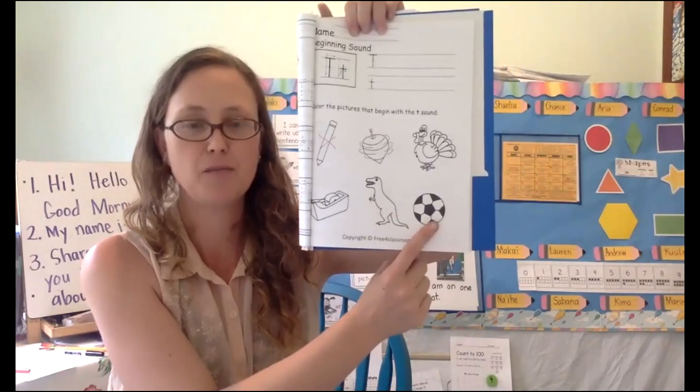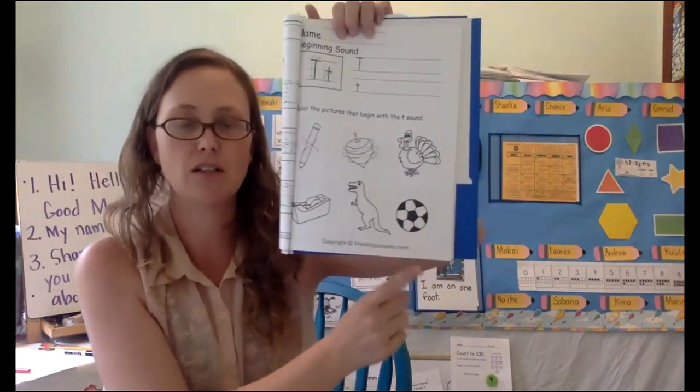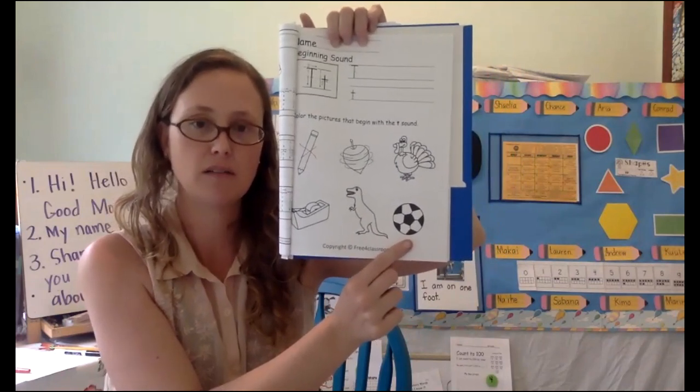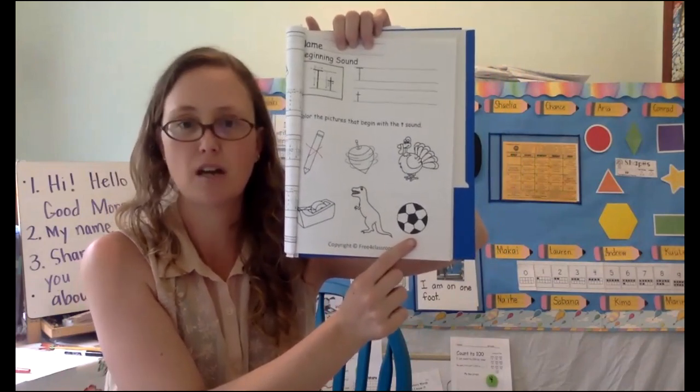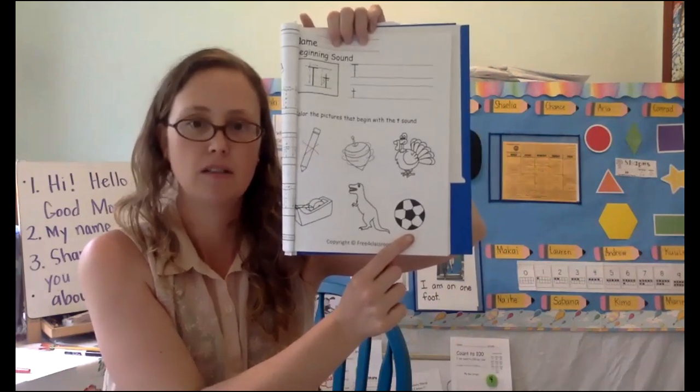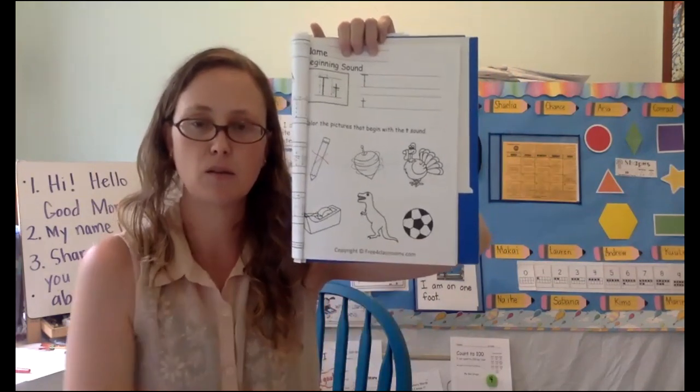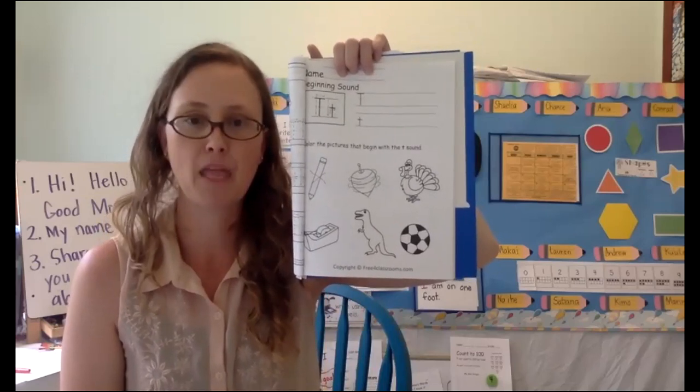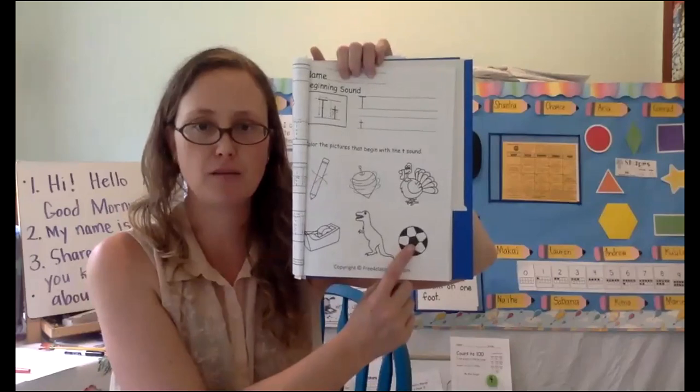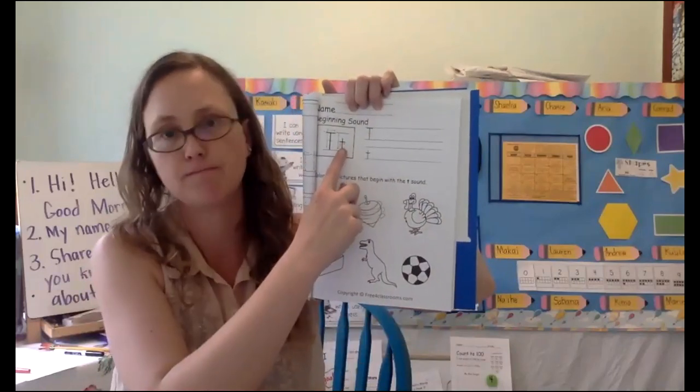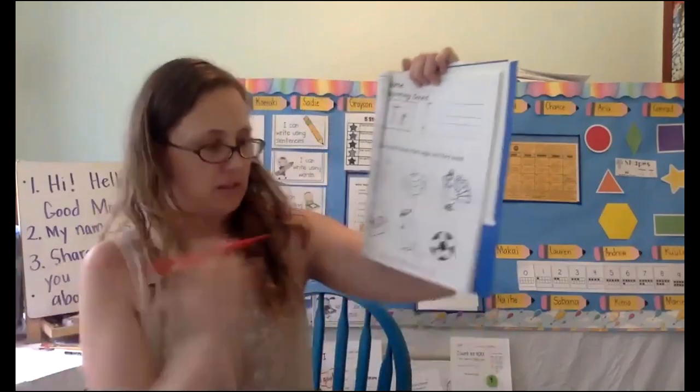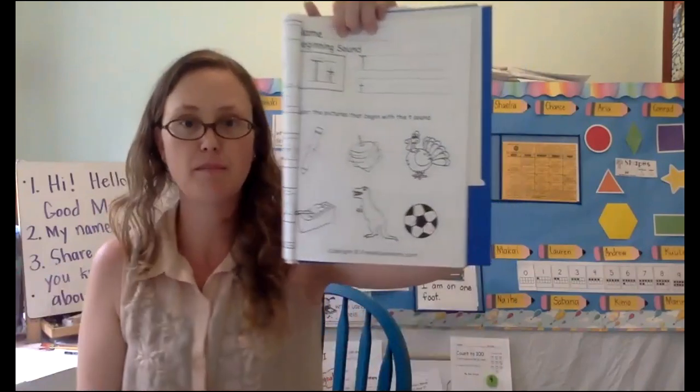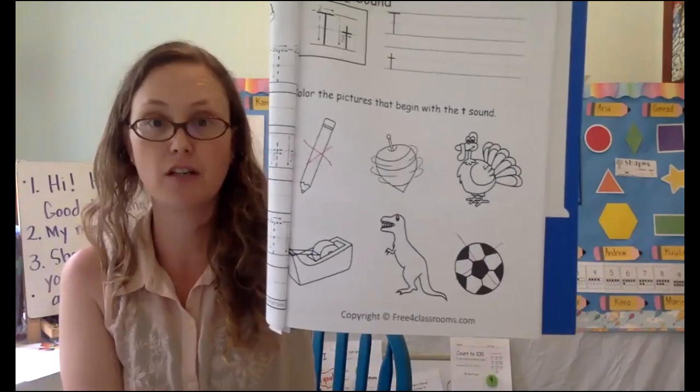And here we have this picture of a soccer ball. It's a game you can play. It's a soccer ball. What's the first sound in soccer ball? Or what if we call it a ball? What's the first sound in ball? So are we going to color this one? Does it have the t sound? We can give that one a red X. And that will help us remind ourselves not to color those two.